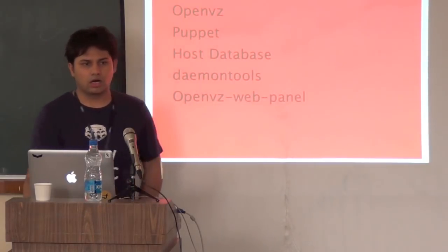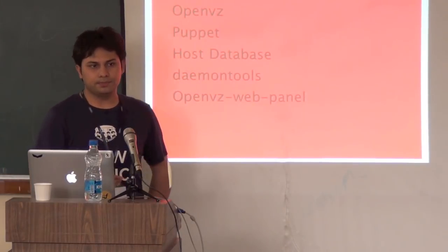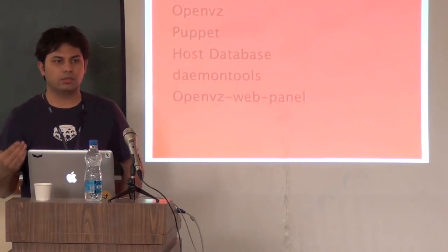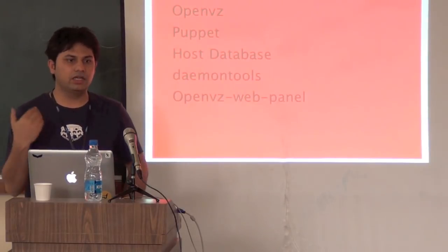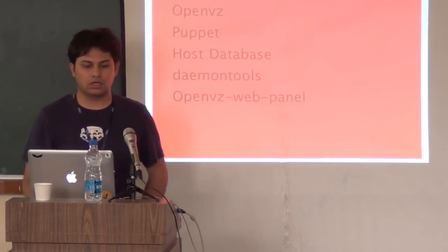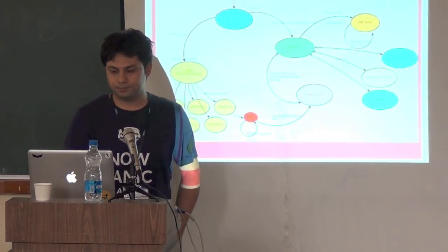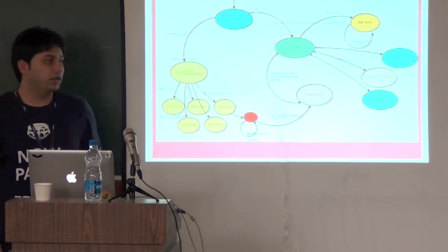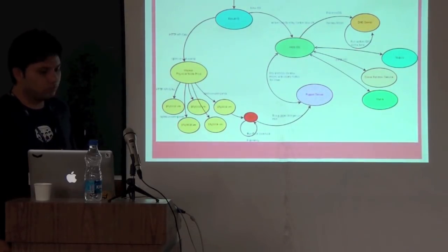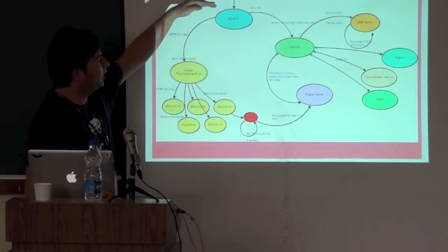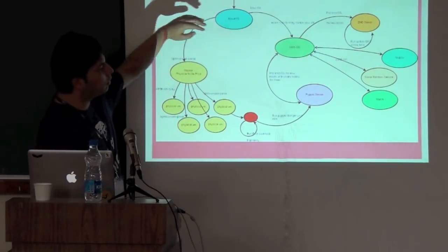We use Puppet for automated roles. We built a host database which really makes everything work. We use daemon tools for all sorts of things, and there is a free software OpenVZ web panel that we use as well. There is a frontend — an API or command line — and it interacts with every other component using an API.